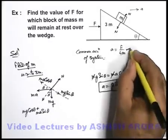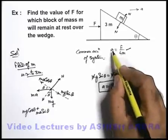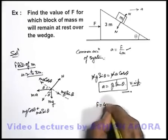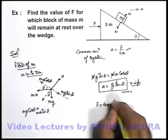Thus, in this situation from this relation, as we know a equals F by 4m, we can simply write F equals 4m times a, that is g tan theta.